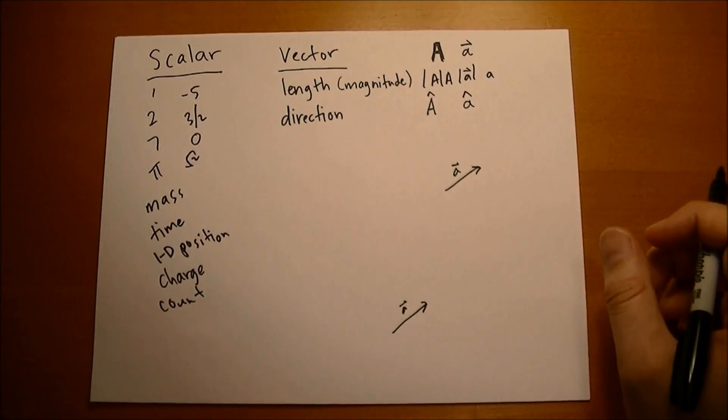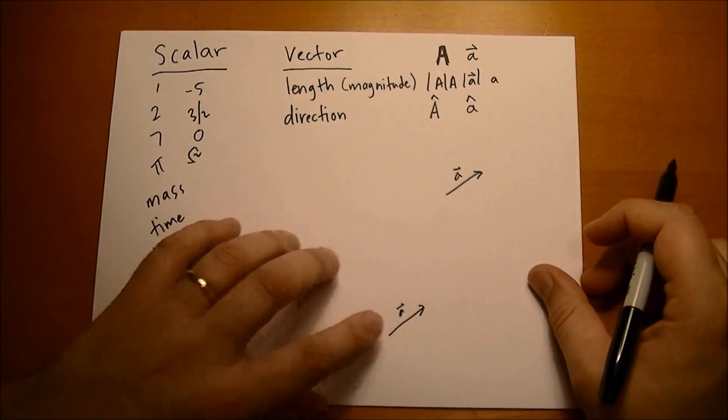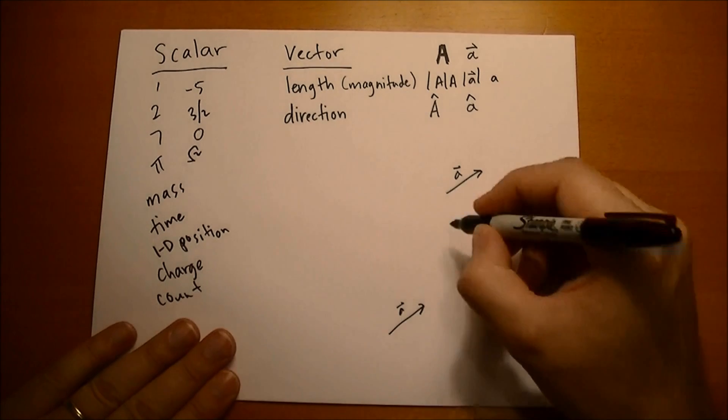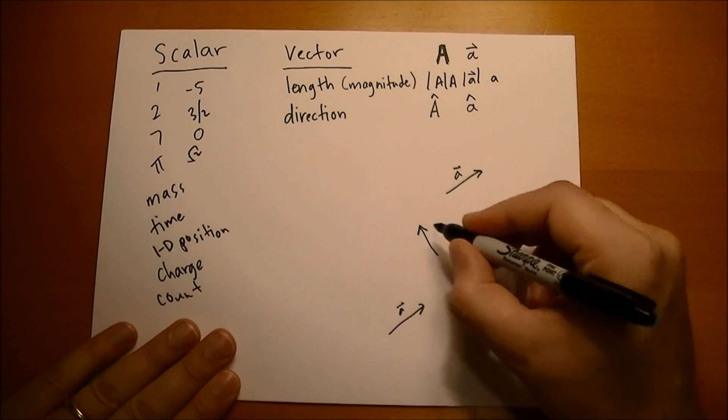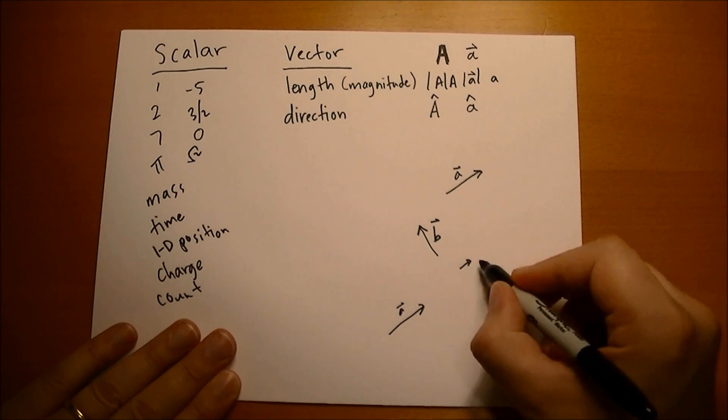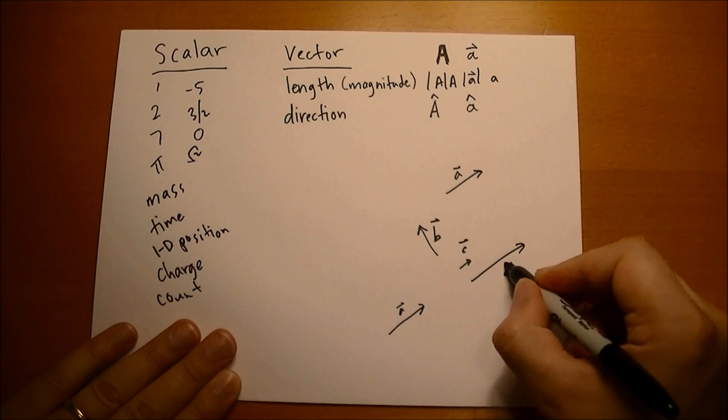The vectors don't change based on where they are. If you have a different direction but the same length, it's a different vector. If you have same direction but a different length, like longer or shorter, it is yet a different vector.